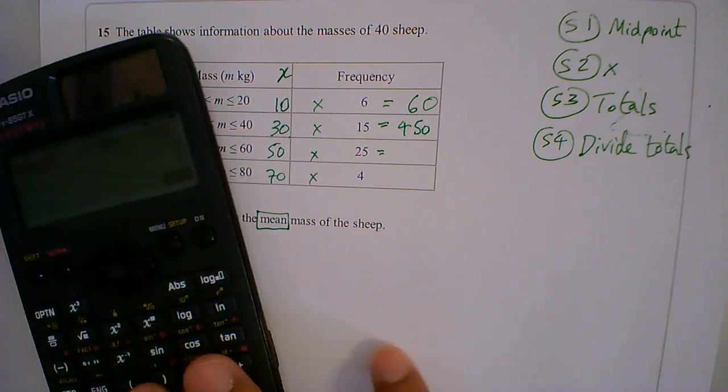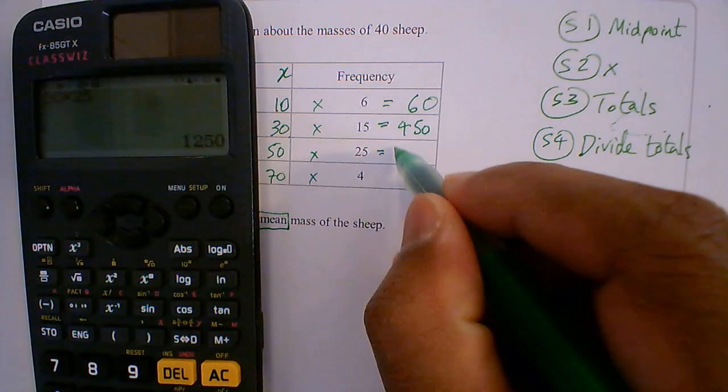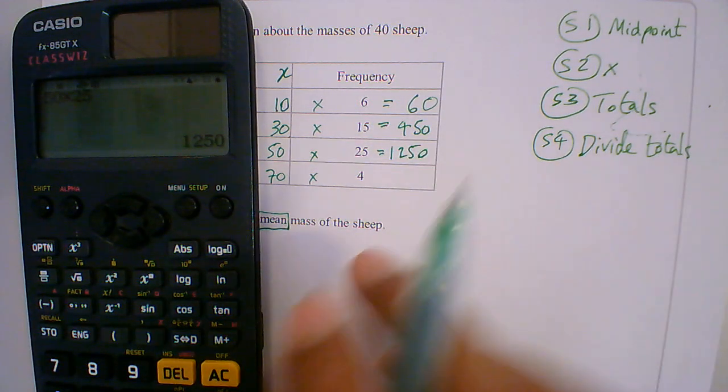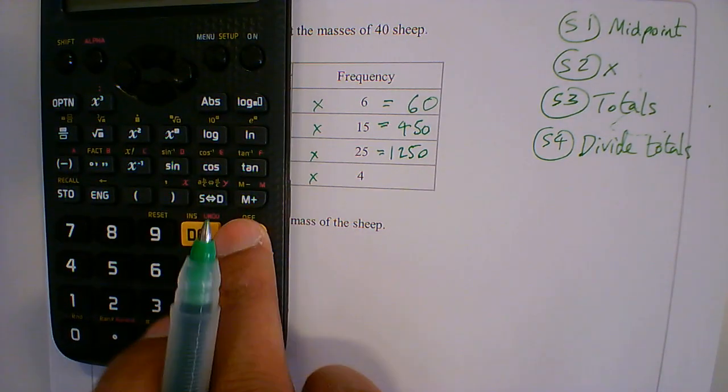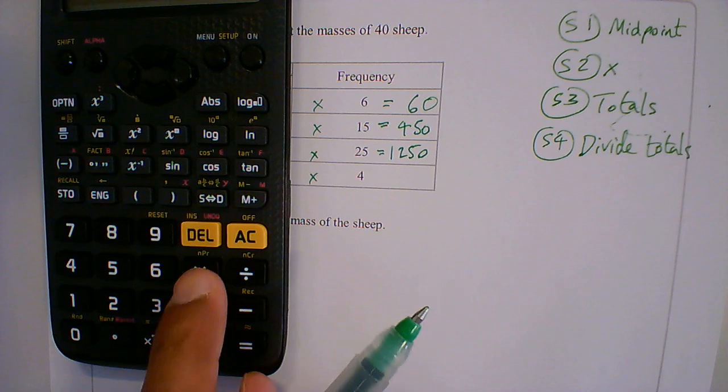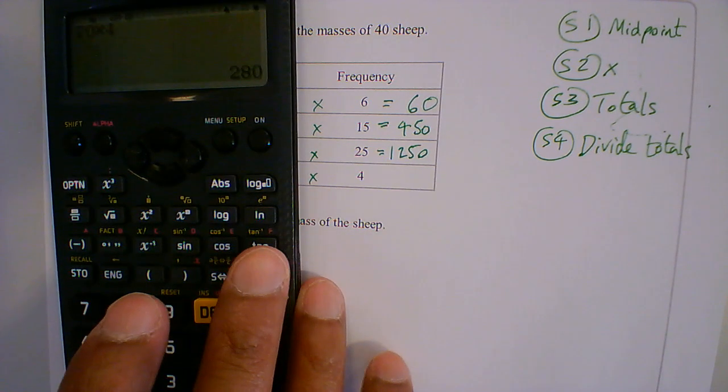Then we've got 50 times 25, gives me 1250, and then the last one, 70 times 4, gives me 280.